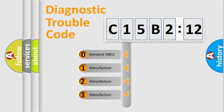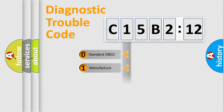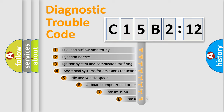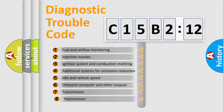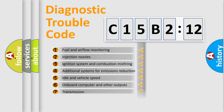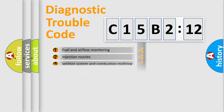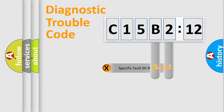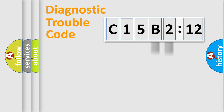If the second character is expressed as zero, it is a standardized error. In the case of numbers 1, 2, or 3, it is a more specific expression of a car manufacturer-specific error. The third character specifies a subset of errors. This distribution is valid only for the standardized DTC code. Only the last two characters define the specific fault of the group.